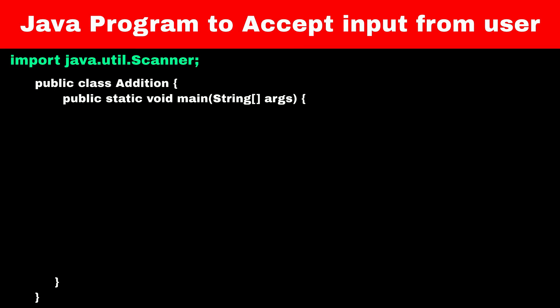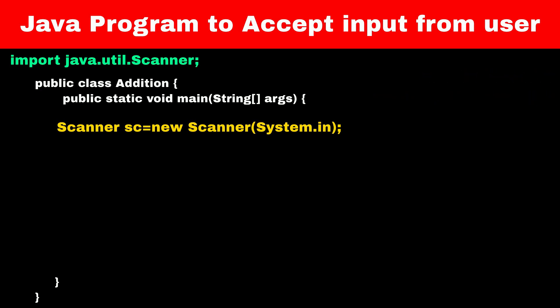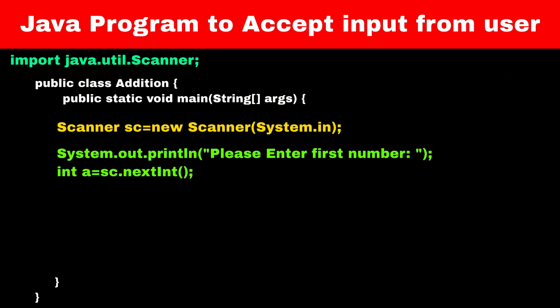The Scanner class comes with many built-in functions for taking input. One such function is nextInt. To call a function of any class, we use object name dot function name. So to call the nextInt function, we will use sc.nextInt(). This statement will take an integer value from the user.